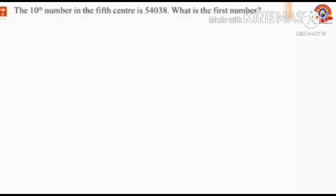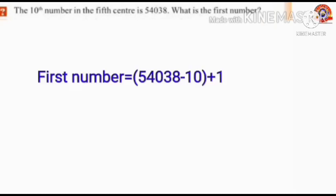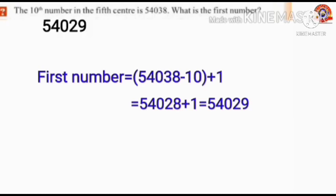Next question: The tenth number in the fifth center is 54,038. What is the first number? To find out the first number we calculate 54,038 minus 10 plus 1. 54,038 minus 10 equals 54,028 plus 1 equals 54,029. So the first number is 54,029.